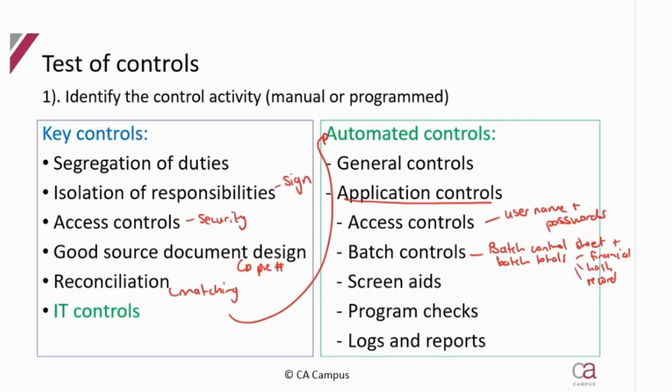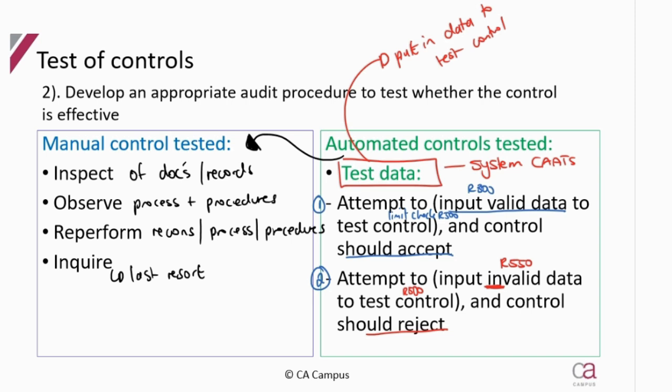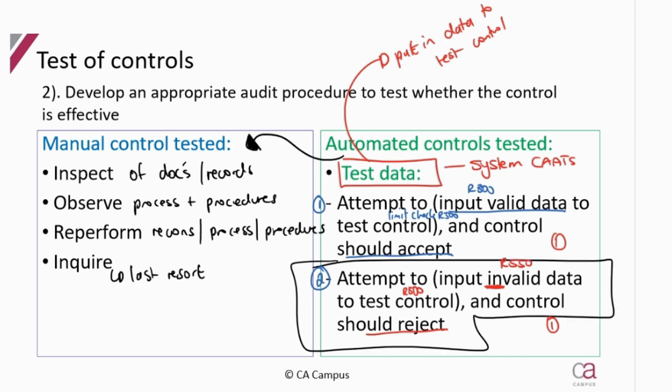Test data applies to all application controls: access controls, screen aids, program checks, logs, and batch controls — noting that batch controls have a manual component with the batch control sheet calculated manually and then input into the system. In a UNISA exam context, although in practice you would test both valid and invalid data, you will likely only be required to describe invalid data to earn the mark.